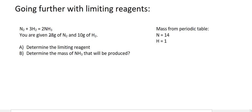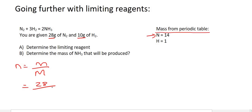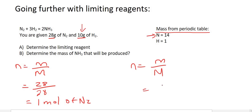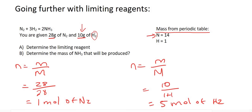What we do is convert both into moles first by using n = m over M. For nitrogen, that's going to be 28 over its molar mass — two nitrogens, so 14 plus 14 equals 28 — giving us one mole of nitrogen. Then for hydrogen, the mass is 10 and the molar mass is two — one plus one — so 10 divided by 2 is 5. We have five moles of hydrogen.